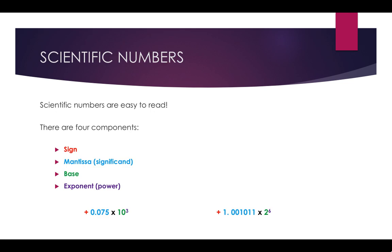Scientific numbers are actually pretty easy to read and there are four components: the sign, the mantissa or significand, the base, and the exponent or power. There are two examples here — the one on the left is decimal or base 10, and the one on the right is binary or base 2. These are the two examples from the previous screen, shown in different colours so you can see where the sign, the mantissa, the base and the exponent are.